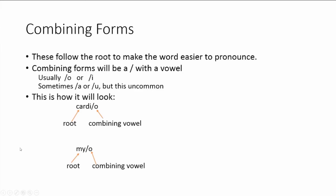We can take our roots and create a combining form by adding a vowel to it so that it's easier to pronounce. So what we will see is a backslash with a vowel, most often times an o, sometimes a backslash with an i. We can have also a backslash with an a or a backslash u, but this is relatively uncommon.